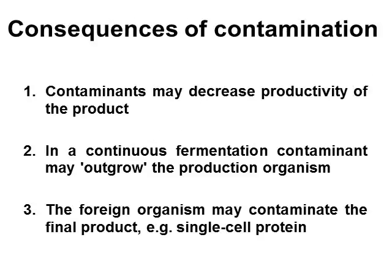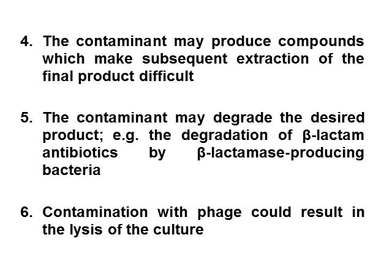Following are the consequences of contamination of a fermenter: 1. The medium would have to support the growth of both the production organism and the contaminant, resulting in a loss of productivity. 2. If the fermentation is a continuous one, the contaminant may outgrow the production organism and displace it. 3. The foreign organism may contaminate the final product, e.g. single-cell protein where cells separated from the broth constitute the product. 4. The contaminant may produce compounds which make subsequent extraction of the final product difficult. 5. The contaminant may degrade the desired product. This is common in bacterial contamination of antibiotic fermentations, where the contaminant would have to be resistant to the normal inhibitory effects of the antibiotic, and degradation of the antibiotic is a common resistance mechanism — for example, the degradation of beta-lactam antibiotics by beta-lactamase-producing bacteria.